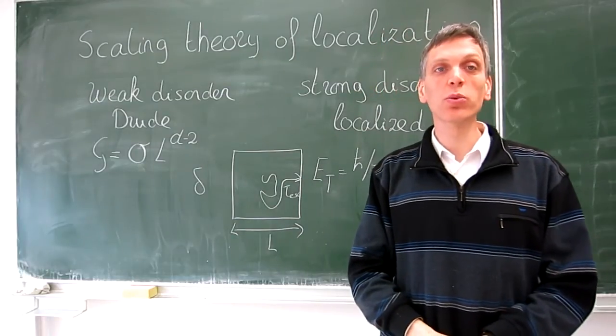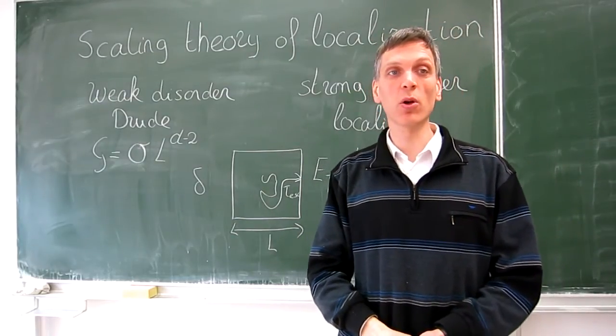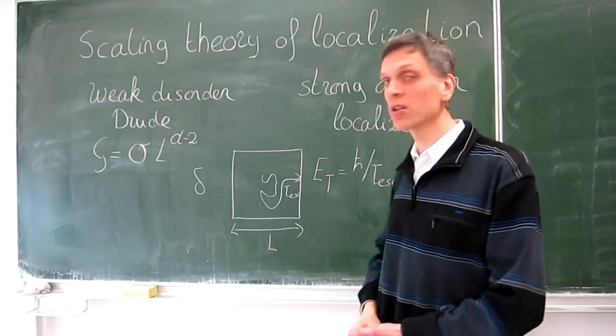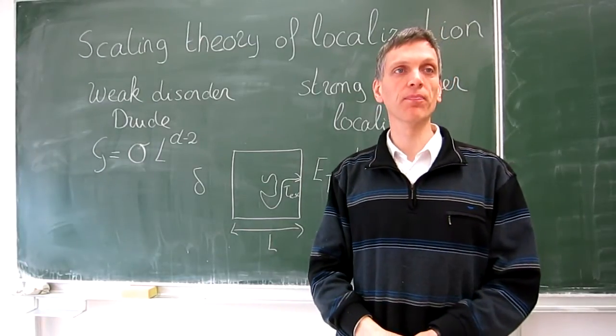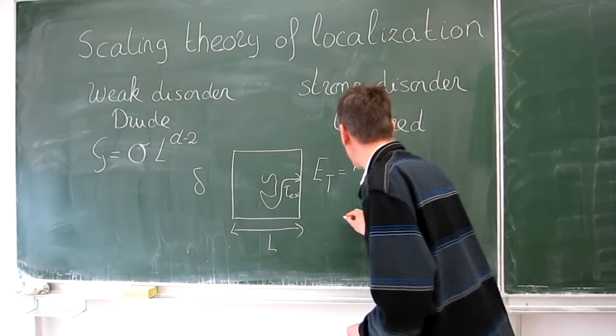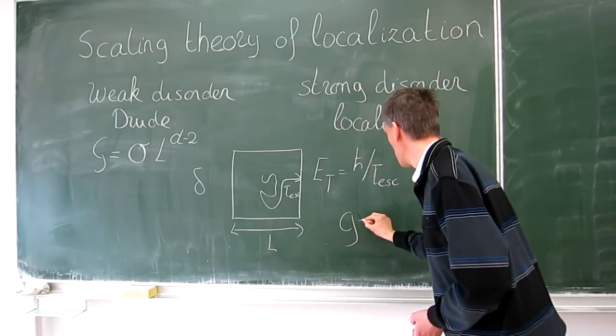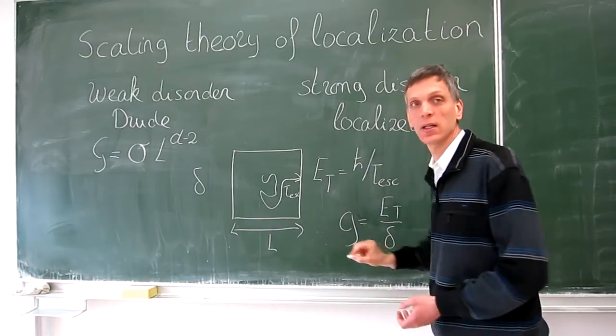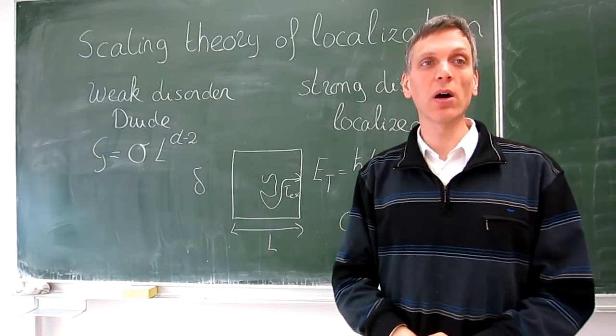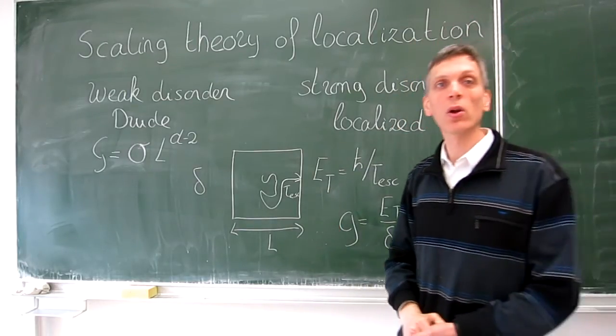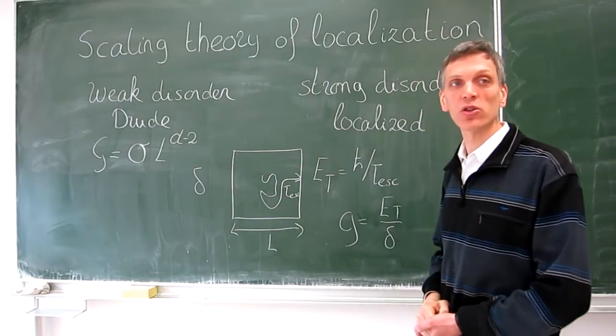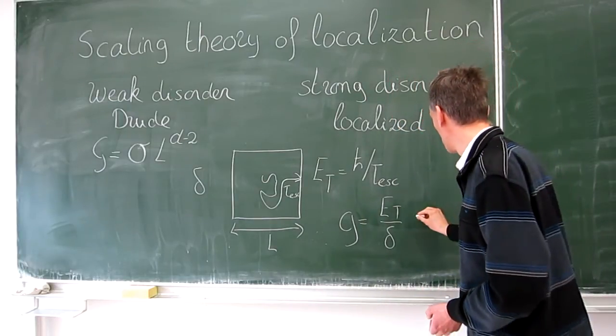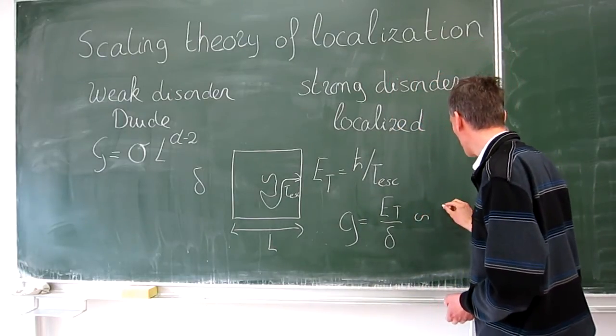The Thouless energy gives the broadening of a typical energy level in the block if the block is embedded in a larger system. The ratio g is E Thouless over delta is known as the Thouless conductance.